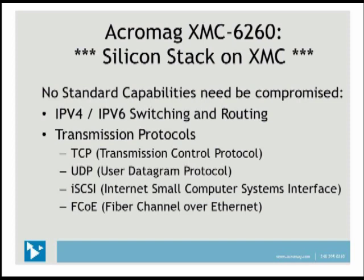With Acromag's XMC-6260, it's a silicon stack on an XMC. No standard capabilities need to be compromised with this card. We can use both IPv4 and IPv6 switching and routing. We have the capability to use four different transmission protocols: TCP, UDP, iSCSI, and FCoE. Not only can you communicate with file-oriented storage, but also with block-level storage, meaning you can communicate with SAN storage. This is why we often call it a unified wire.